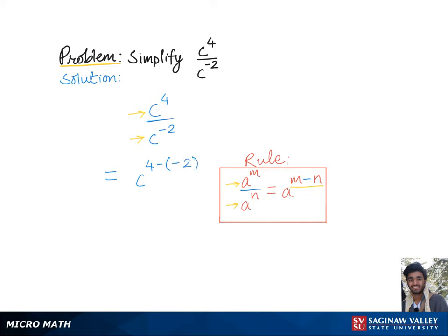That gives us 4 minus negative 2. Two negatives become positive 2, which gives us the final answer c to the 6th.